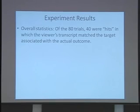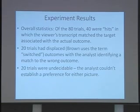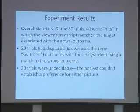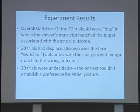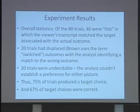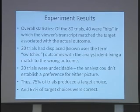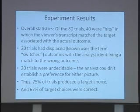40 of the 80 trials were hits, where the viewer's transcript matched the target associated with the actual outcome. 20 were displaced — called 'switched' in that chapter, though he discusses the displacement problem elsewhere. And 20 trials were undecidable, where the analyst couldn't establish a preference for either picture. It was a surprisingly clean 50%, 25%, 25% split — though round numbers do come up in research. So 75% of trials produced a target choice of some kind, and 67% of those were correct. That's better than the background average, particularly for trained, experienced viewers using a rigorous protocol.